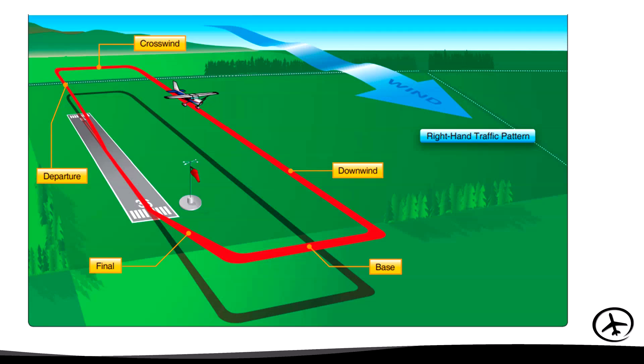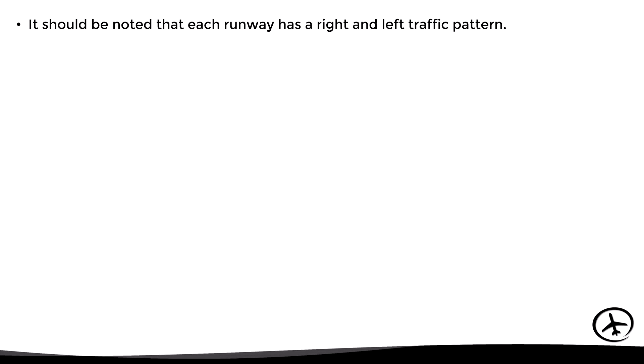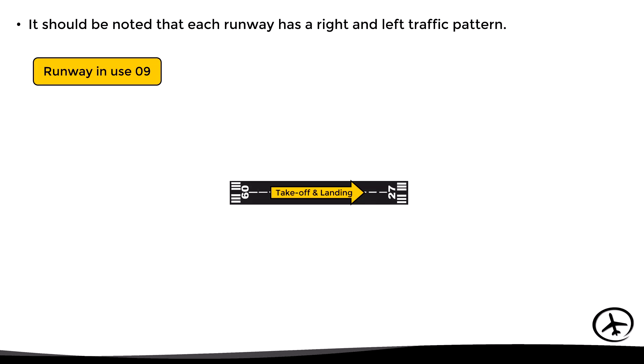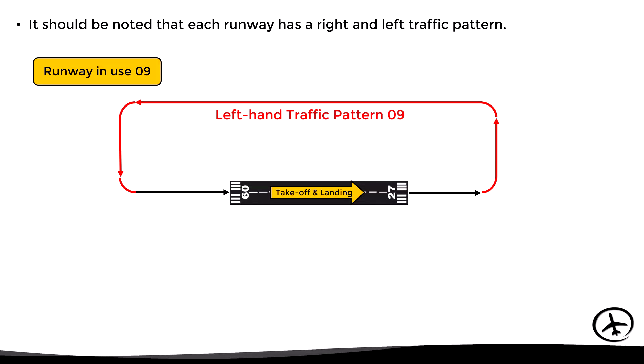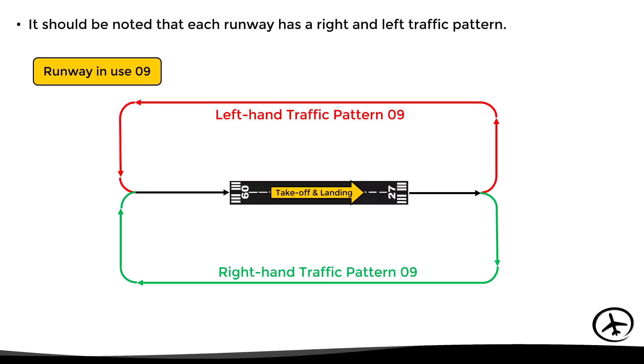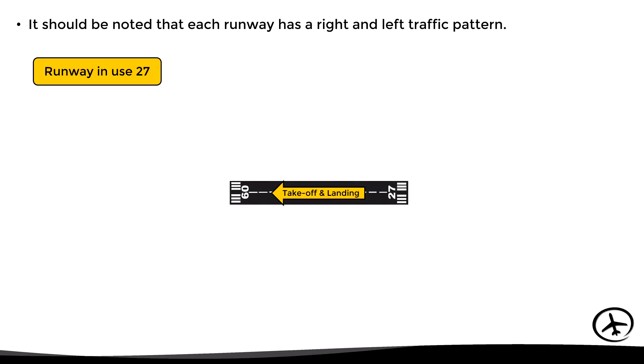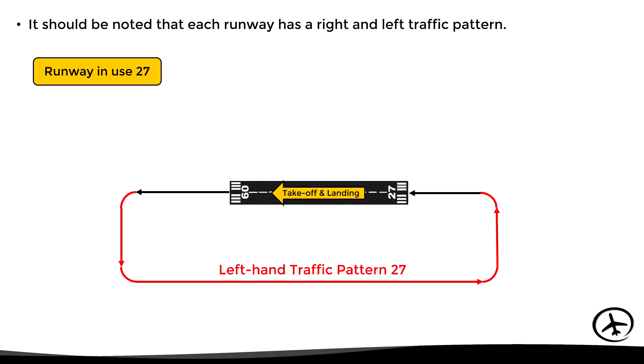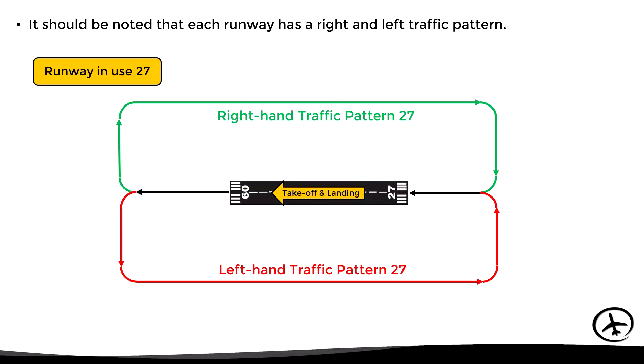We have to remember that each runway by default has both a left and a right pattern. For example, runway 09 has its own left and right patterns, while runway 27 also has its own left and right patterns, which are completely different from the runway 09 patterns. For this reason it's really important to mention the runway in relation to which the pattern is being flown, to avoid misunderstandings.